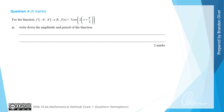For the amplitude, we need to inspect the leading coefficient value. The amplitude is simply that value, ignoring the sign if it's negative. So for this, we have that the amplitude is equal to 5.